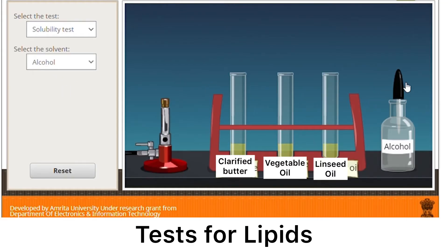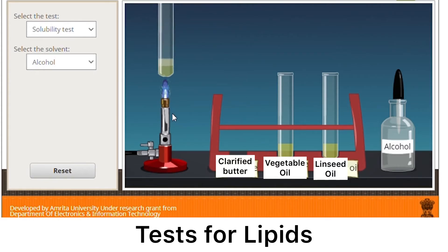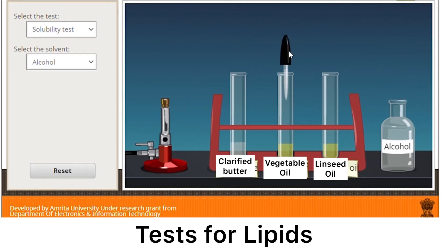For the solubility test of lipids with ethanol as our solvent, we will be using a Bunsen burner. After adding about 5 ml of ethanol into our sample, directly heat the mixture and observe what happens. Make sure that you always write down your observations so you won't need to re-watch the video when answering the lab report sheet later.